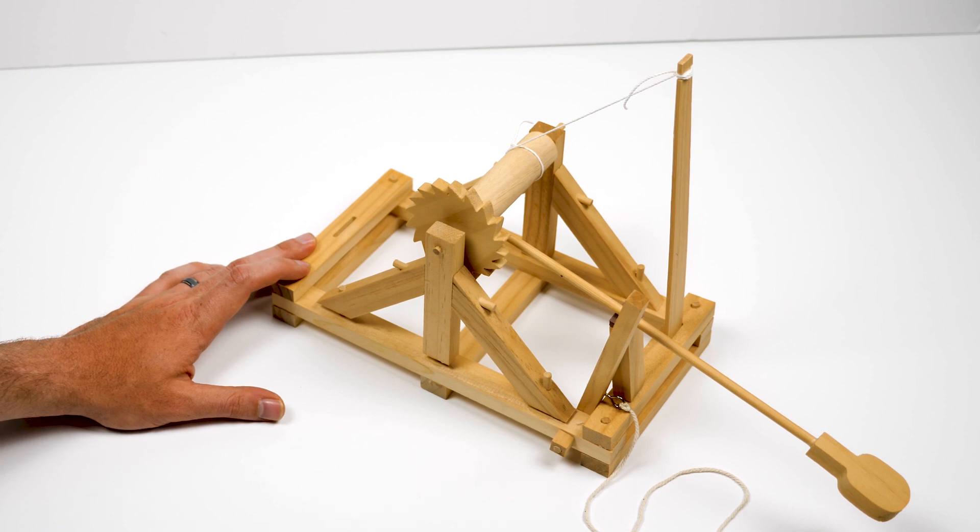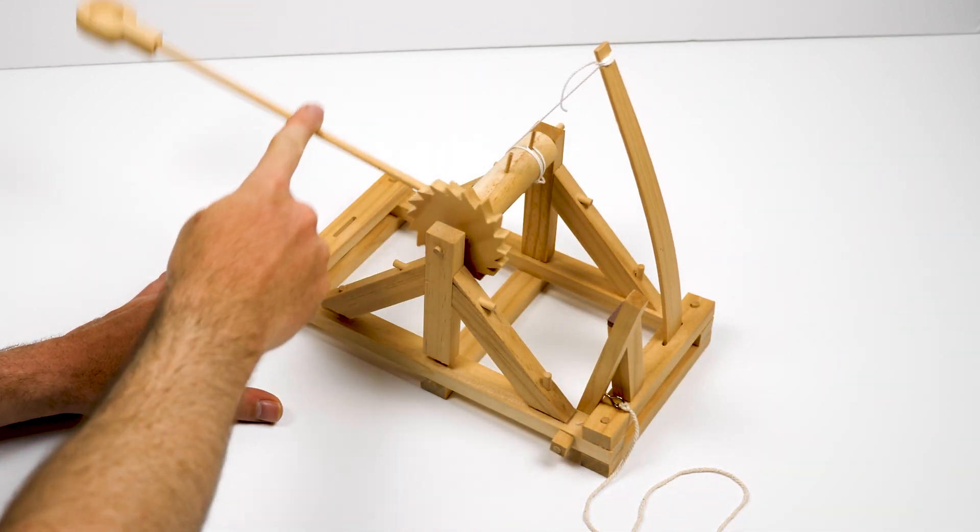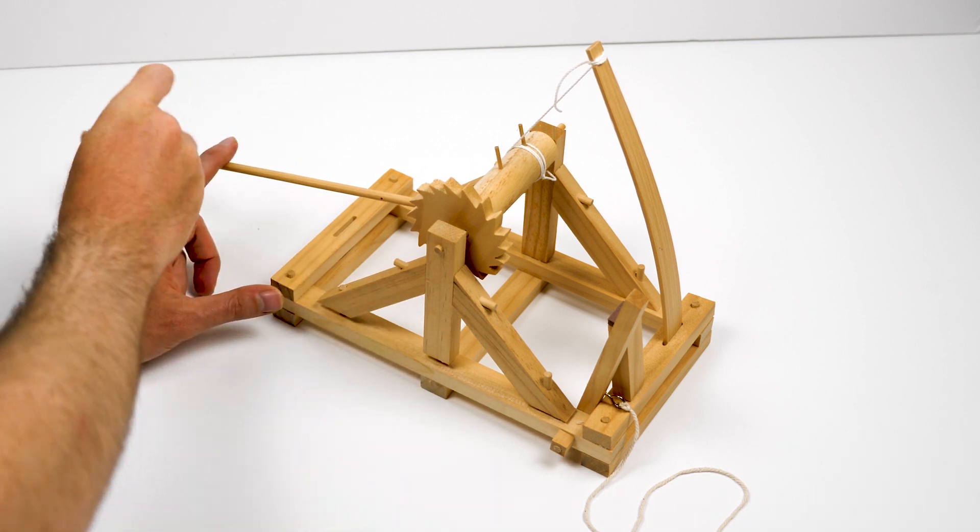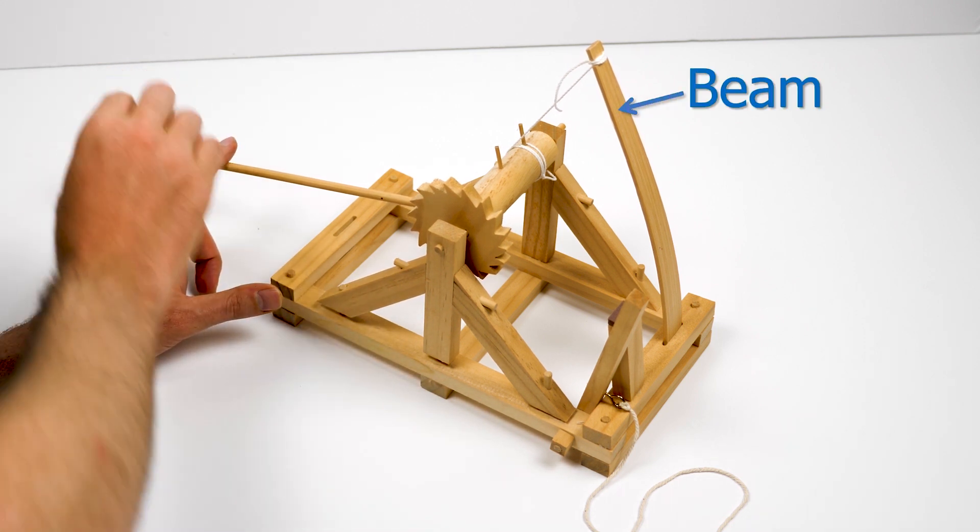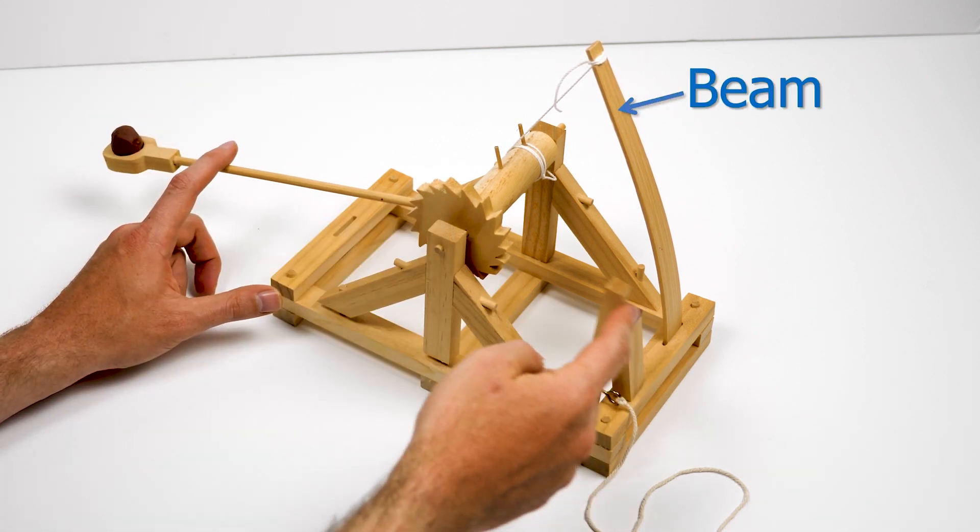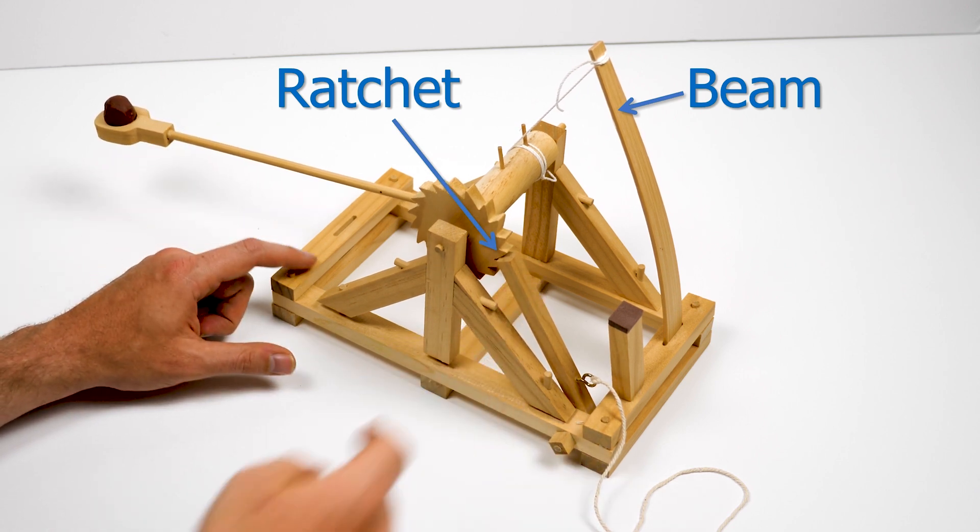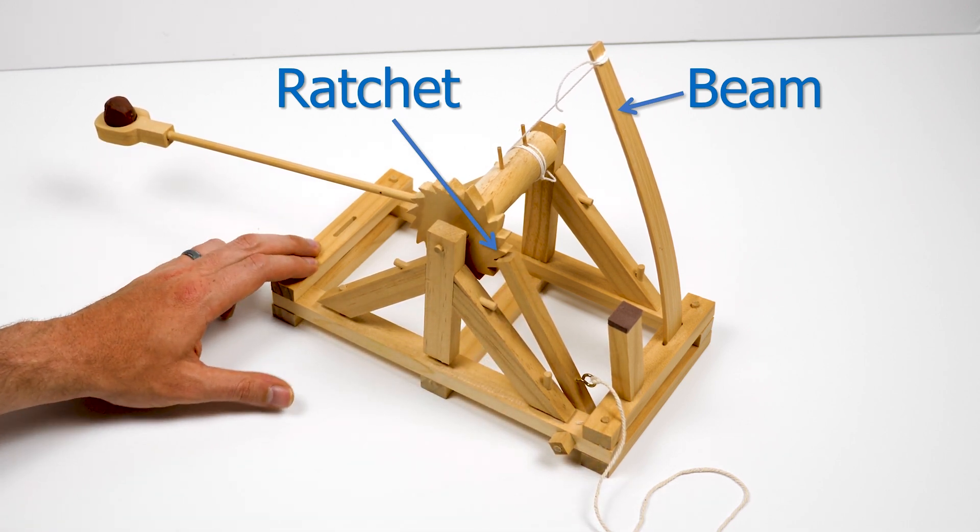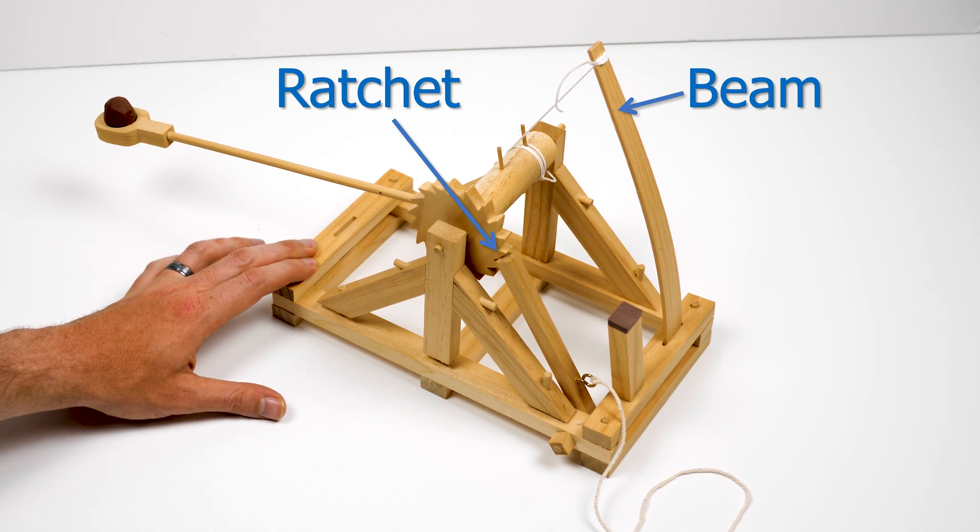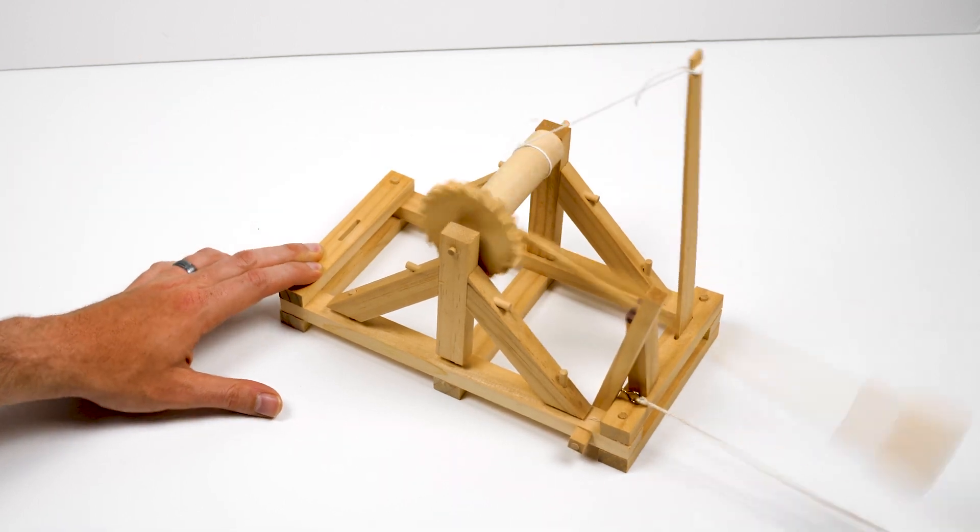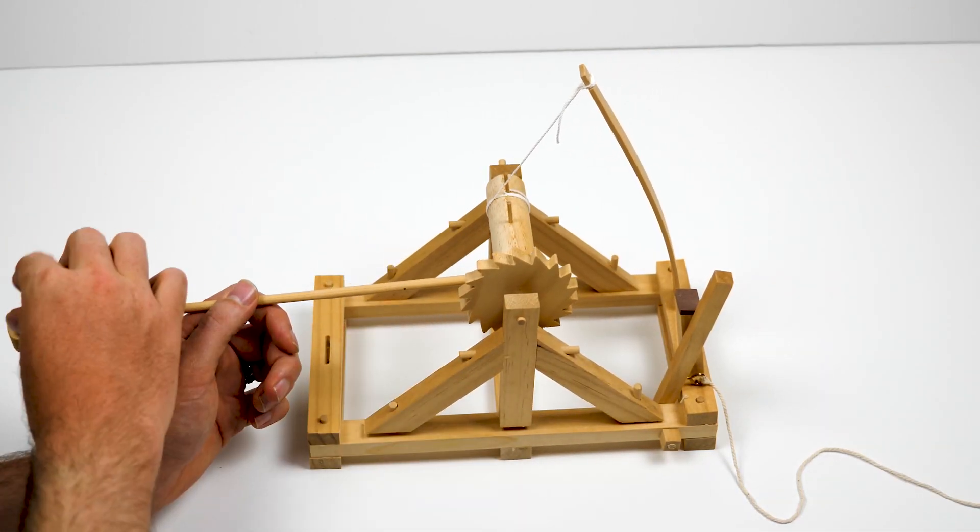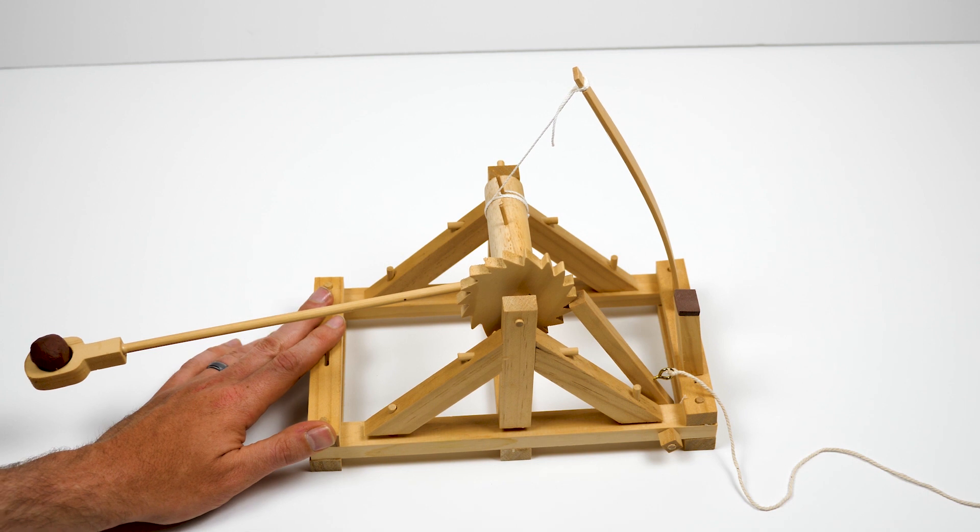You can see from this toy model that as the catapult's arm is pulled back, a string gradually deforms a beam as the string is wrapped around a drum. A ratchet device, which happens to be incorrectly assembled within this toy unfortunately, is used to keep the elastic strain energy stored in the deformed beam. When the trigger is pulled, the elastic strain energy is released and the catapult launches its projectile.